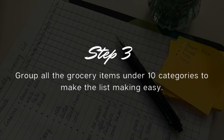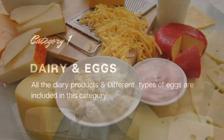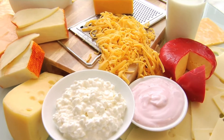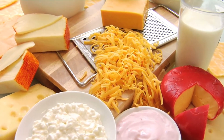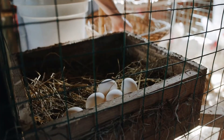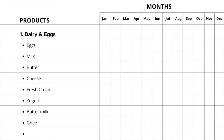Step 3: group all the grocery items under the following 10 categories to make grocery listing easier. The first category is dairy and eggs. Under this category you can add all the dairy items like milk, cheese, butter, ghee, etc., and different types of eggs. These are the dairy and egg products used in my kitchen.